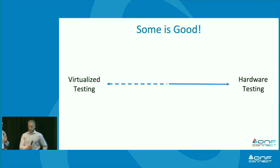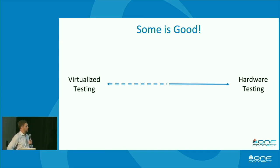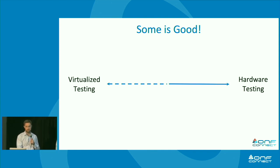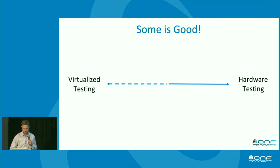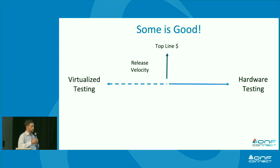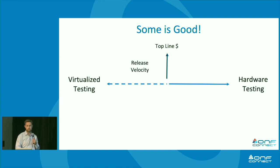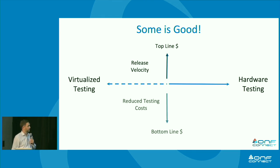What I would like to impart is that some is good. Looking at the spectrum of virtualized testing versus hardware testing — we all know you can't do everything virtually; you've got to exercise the data plane and do throughput testing. But the further you move towards virtual, you increase your velocity — release velocity, image velocity, version velocity — which for the operator business equates to top-line revenue. At the same time, the further you go left, you're also reducing your cost.